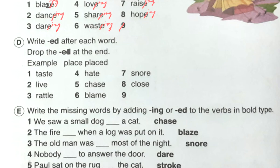Let's start exercise D: test→tested, live→lived, rattle→rattled, hate→hated, chase→chased, blame→blamed, snore→snored, close→closed.